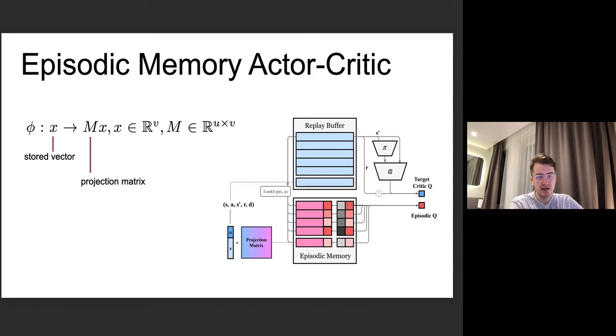We propose to use a single memory model for all states and actions. Given a state and an action, we concatenate them and multiply by the random projection matrix, obtaining low-dimensional representation. We add this representation to the memory model with corresponding episodic return.